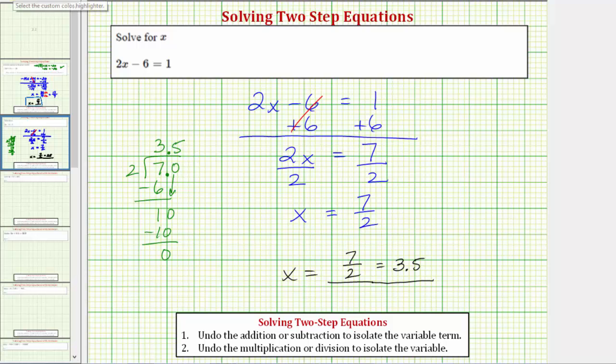Before we go, let's check our solution by substituting 7 halves for x into the original equation to make sure it satisfies the equation. So performing the substitution, we would have 2 times 7 halves minus 6 equals 1.